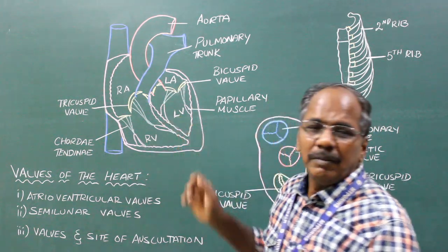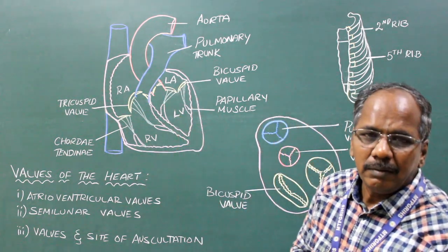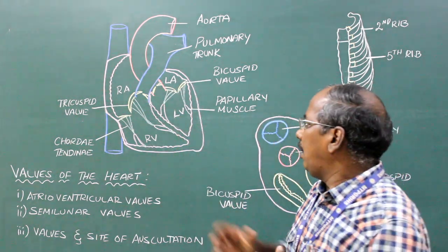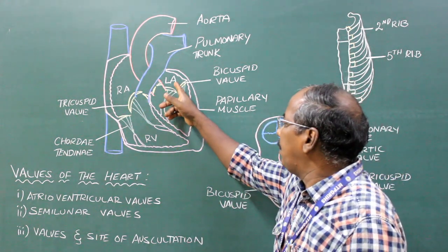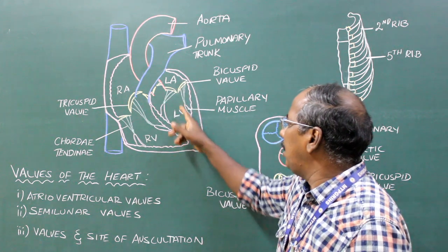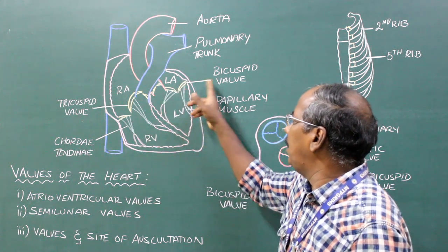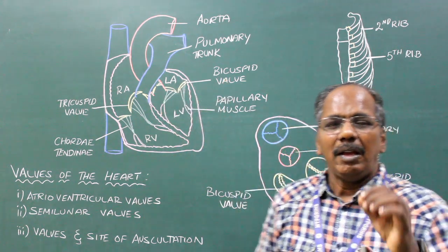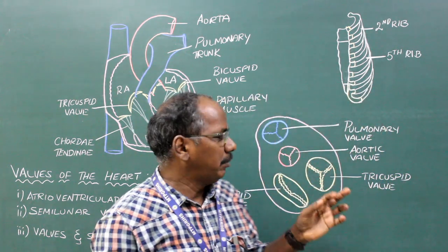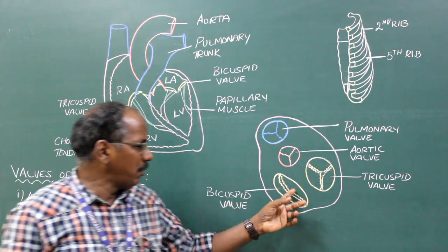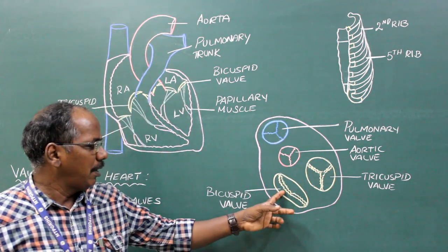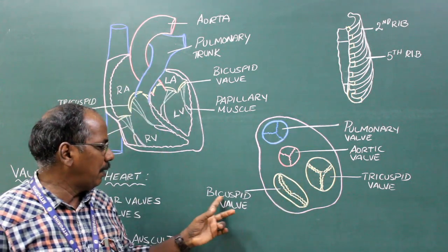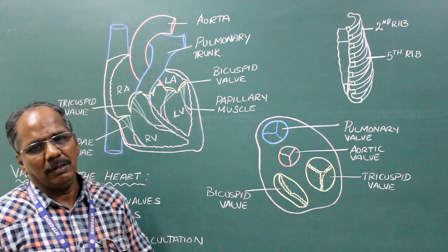Left atrioventricular valve. It is present between the left atrium and left ventricle. It consists of two cusps and hence is named the bicuspid valve.